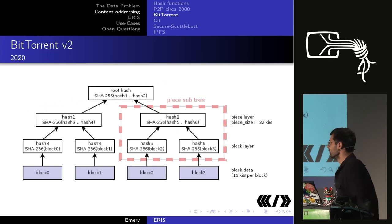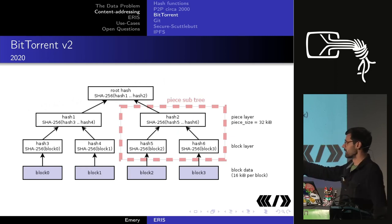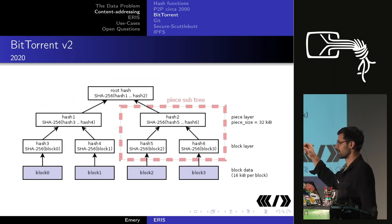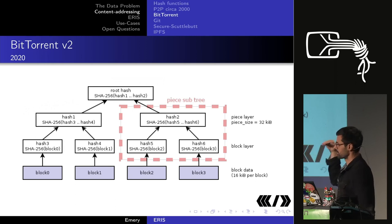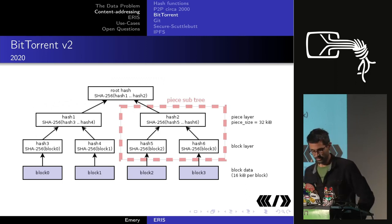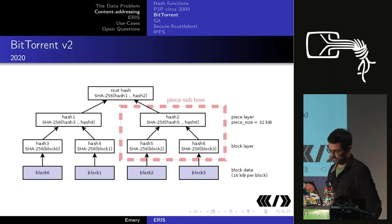In the new torrent format, for every file you break it into fixed-sized pieces, hash groups of pieces to create a level of a tree, then keep hashing upward until you have one root hash for the file — a Merkle tree.